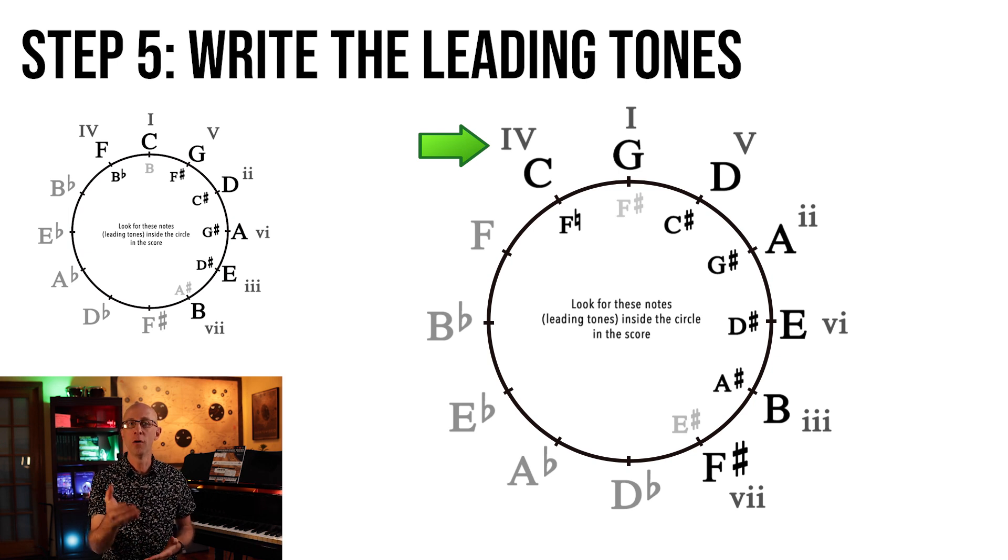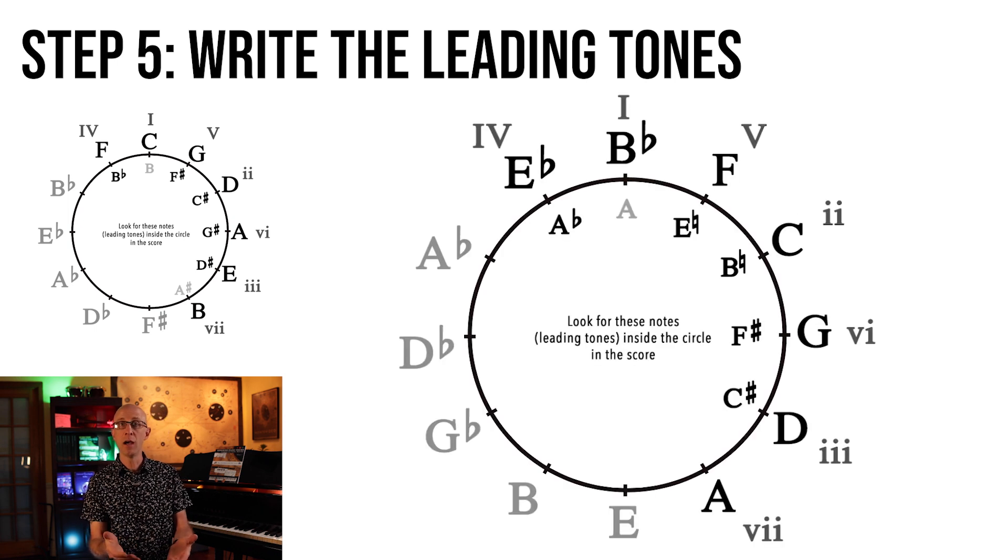So for C, the 4 at 11 o'clock, we change this F sharp to an F natural, lowering it by a half step. Now we have an accidental to look for that will help us identify something that is targeting the 4. In the key of B flat, we have an A as the leading tone for B flat, then E is the leading tone for F, then a B natural for C, and so on. And for the 4 chord, E flat, we take this A and lower it a half step to A flat. That's it.